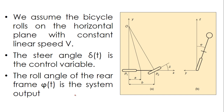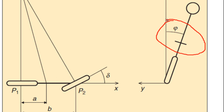We are only concerned with this angle phi — this is the roll angle of the rear frame. We want this angle to be 0, which is very similar to our inverted pendulum. If phi is 0, it means that the bicycle is going fine.